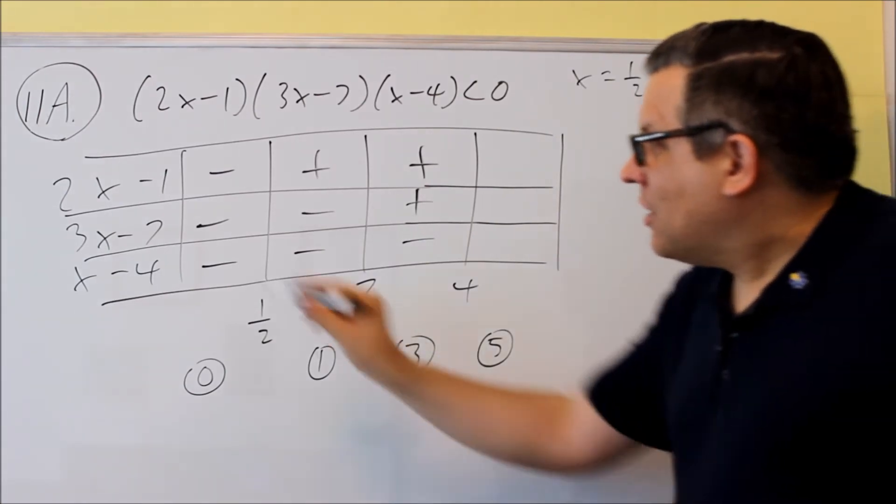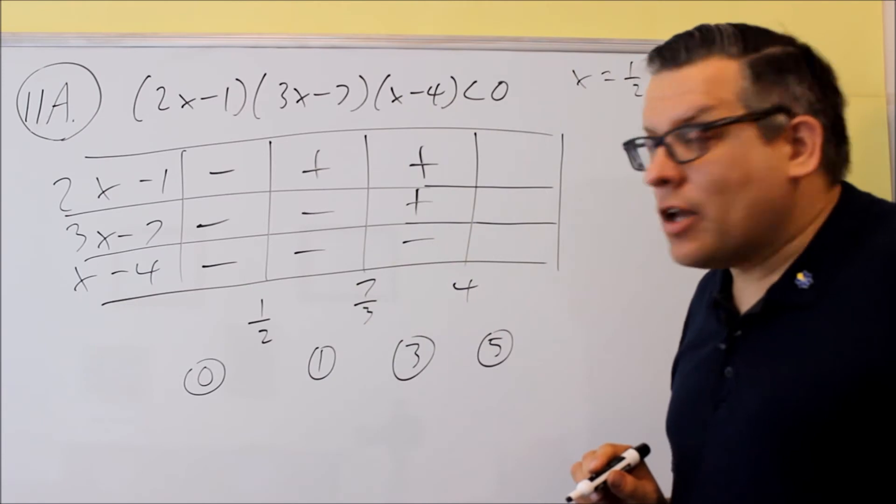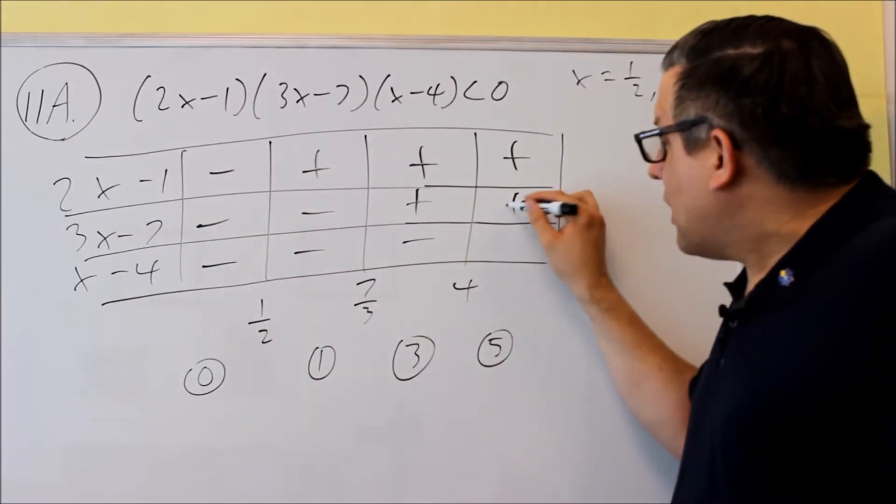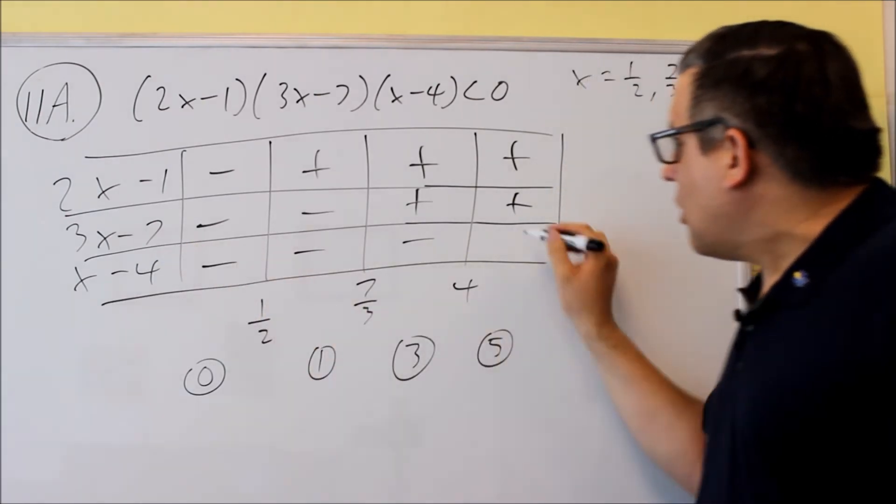Then I'll put in a five. Two times five is ten minus one, positive number. Three times five minus seven is also a positive number. Five minus four is also a positive.